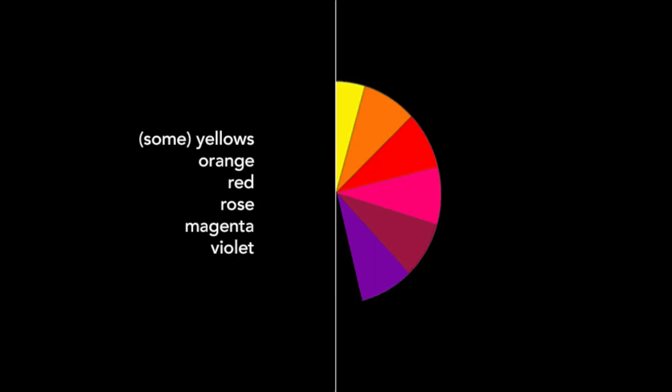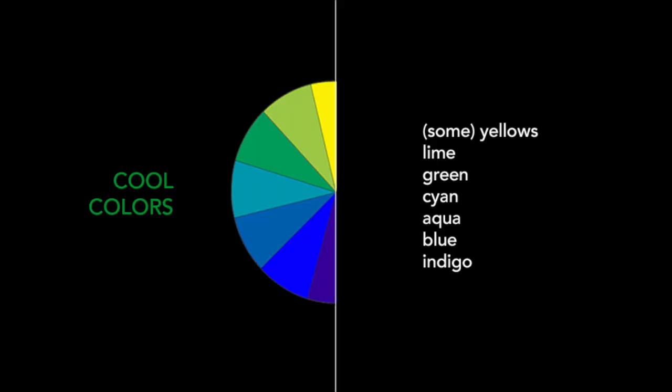Keep your warm colors and your cool colors separate when thinking about general hues. For example, red, orange, magenta, and rose are all warm hues. Whereas on the other side, the cool hues are blue, cyan, aqua, and green. That's it for general hue.